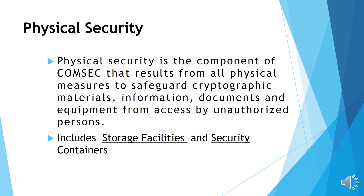The next element of COMSEC is physical security. Physical security is the component of COMSEC that results from all physical measures to safeguard cryptographic materials, information, documents, and equipment from access by unauthorized persons. It includes storage facilities and security containers.